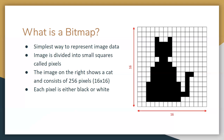First we need to know what a bitmap is. It's the simplest way to represent image data, and this is how pictures are represented in software. An image is divided into small squares called pixels. The image on the right shows a cat, and it consists of 256 pixels because it's a 16 by 16 pixel image, which makes 256.